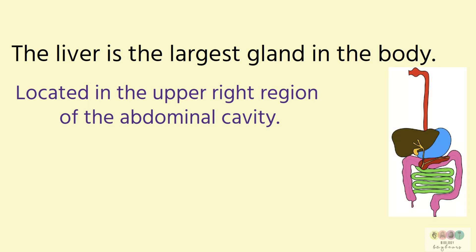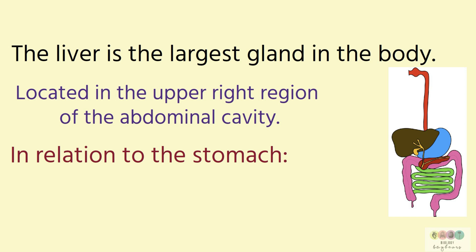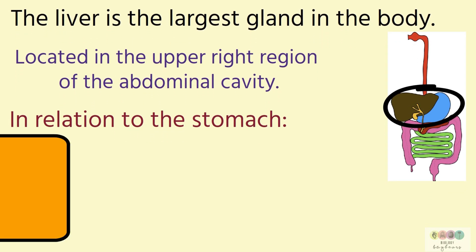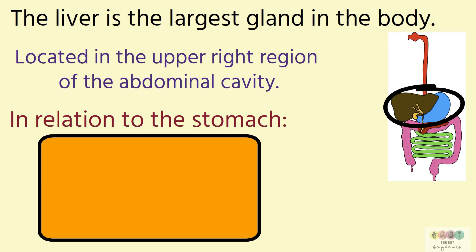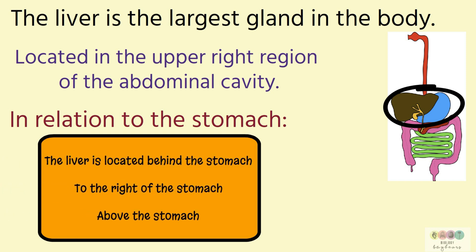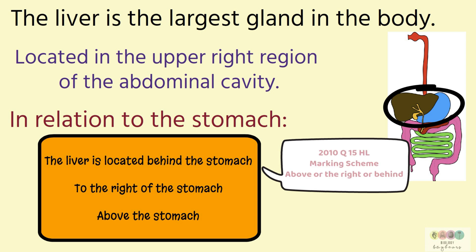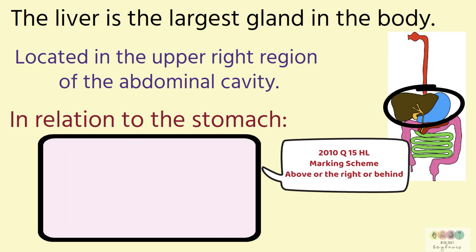A previous exam question asked about the location of the liver in relation to the stomach. In 2010, question 15, the accepted answers were: the liver is behind the stomach, to the right of the stomach, or above the stomach, as seen on the official marking scheme. If doing the Leaving Cert today, I would simply state that the liver is located to the right of the stomach.